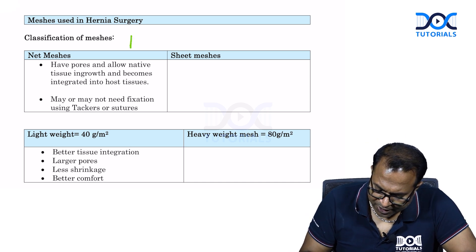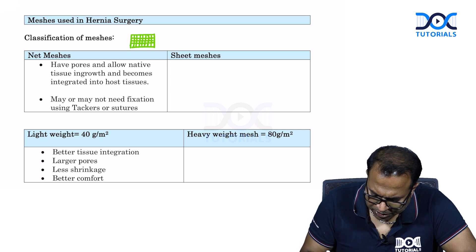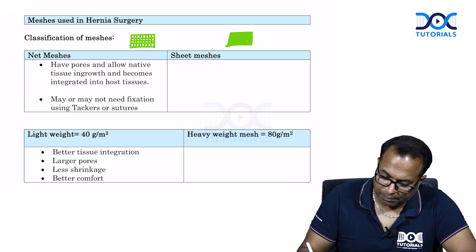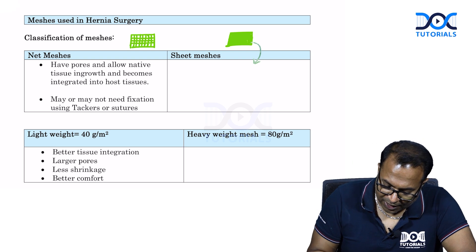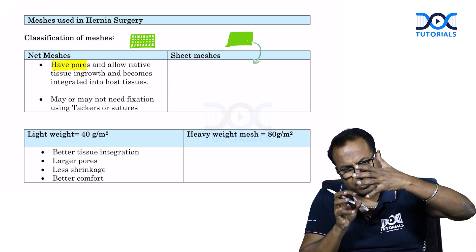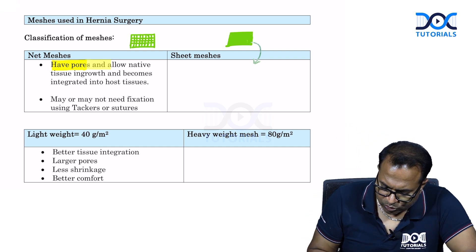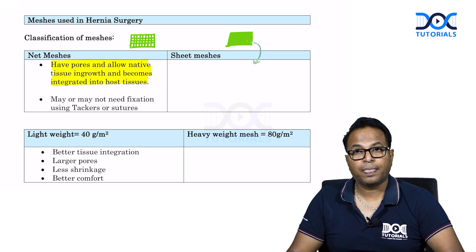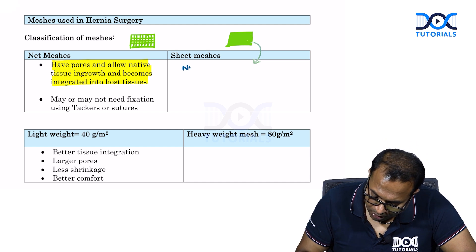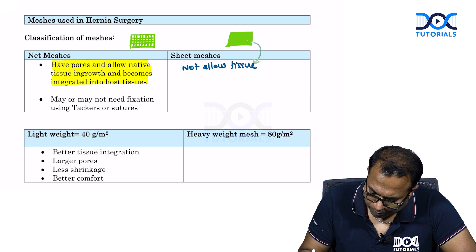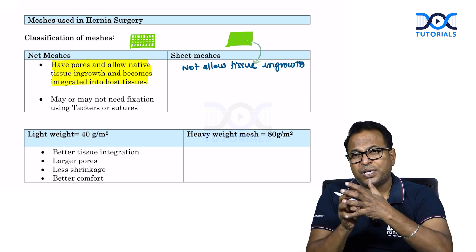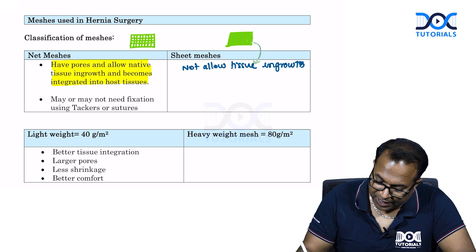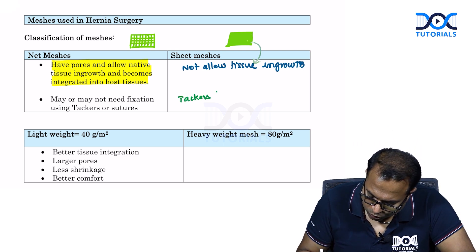There are two types of mesh. One is a netted mesh with small holes, and the other is a flat sheet mesh with no pores. Flat sheet mesh is not used nowadays. We use net mesh with pores because tissues grow in between the pores, holding the mesh and allowing native tissue ingrowth, becoming integrated into the host tissue. Because of this tissue ingrowth, net mesh requires no fixation with sutures or tackers, whereas sheet mesh requires tackers or sutures.